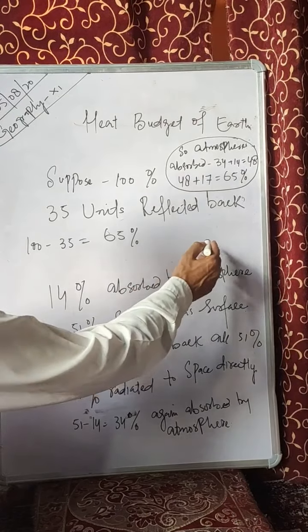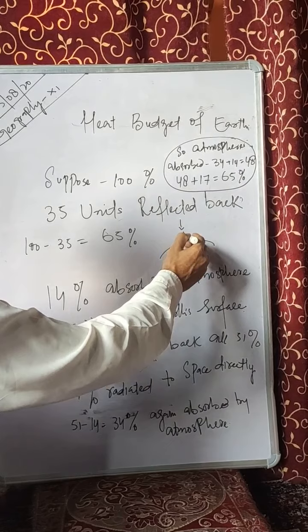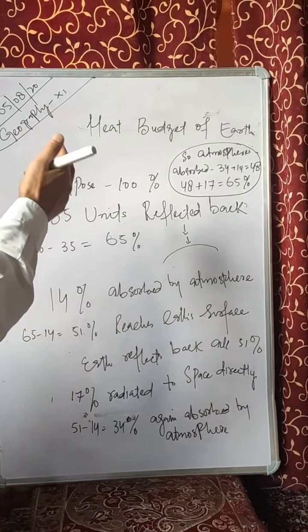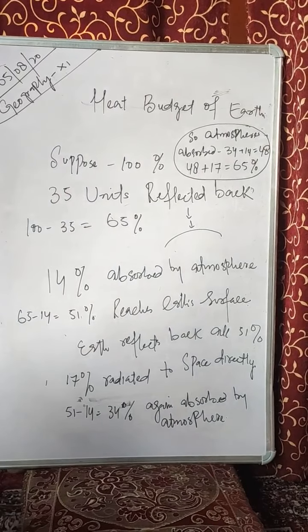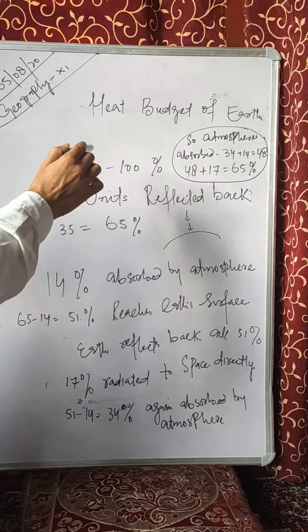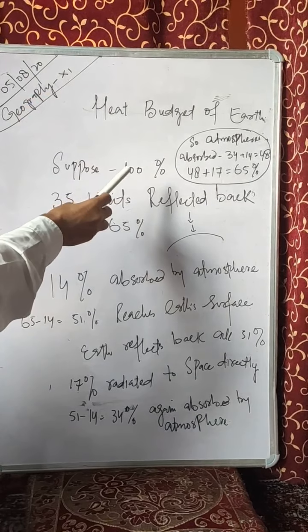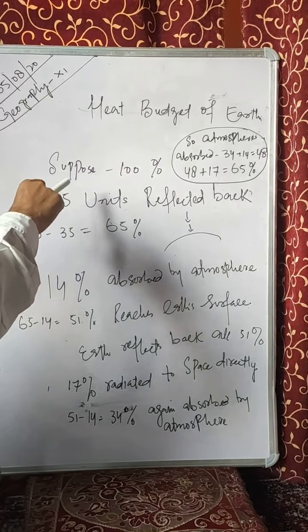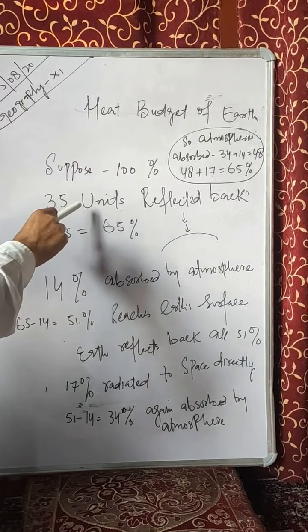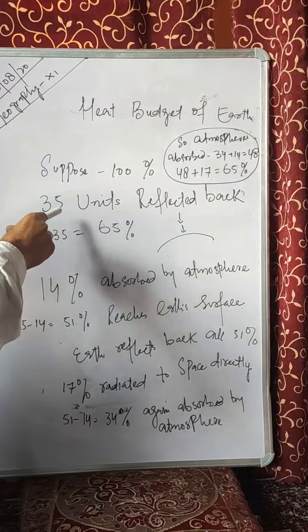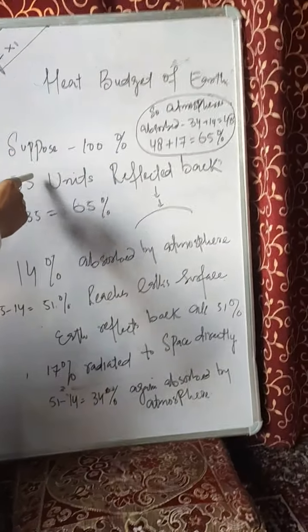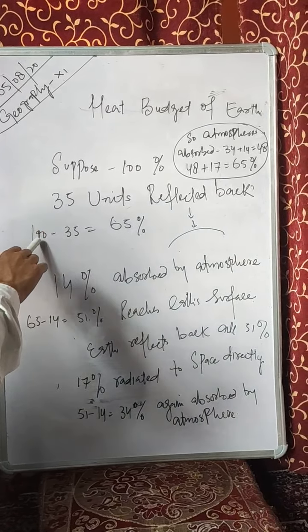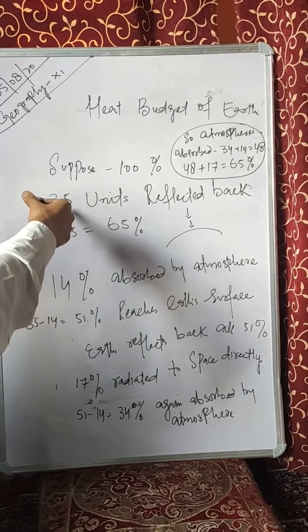In order to pass through the earth's atmosphere — although the atmosphere is transparent to insolation — there is still an amount that is reflected back. Out of the 100 units received at the top of the earth's atmosphere, 35 units, that is 35%, are reflected back to space. So now there is 100 minus 35, which is 65%.